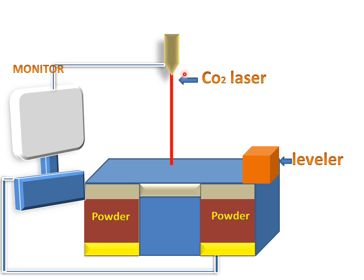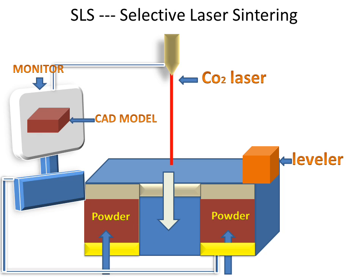This is a laser. We will use a CO2 laser in selective laser sintering. This platform will go downward — this is the platform for the prototype. And this platform will move upward — this is the platform for powder. This is the CAD model which we want to make in this machine.